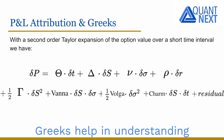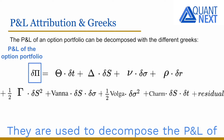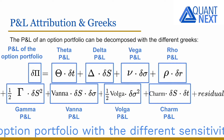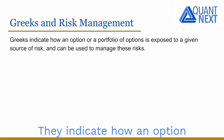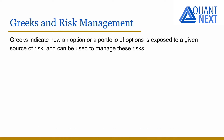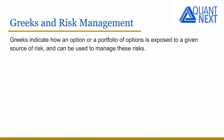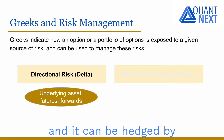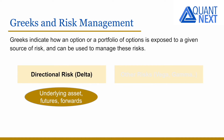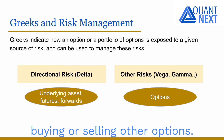Greeks help in understanding the different dimensions of risk involved when trading options. They are used to decompose the P&L of an option portfolio with the different sensitivities, and they are very useful in risk management. They indicate how an option or a portfolio of options is exposed to a given source of risk and can be used to manage them. The directional risk is measured by the delta and it can be hedged by purchasing or selling the underlying asset or futures and forward contracts on it. Other risks, such as vega or gamma, can be managed by buying or selling other options.